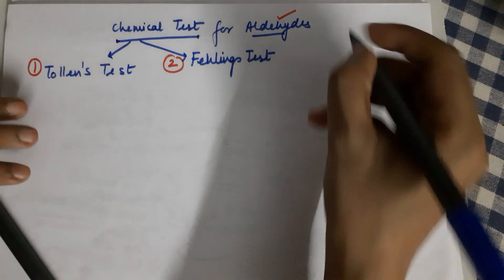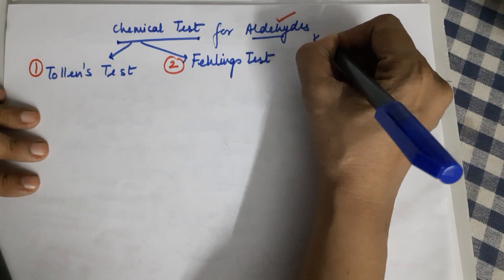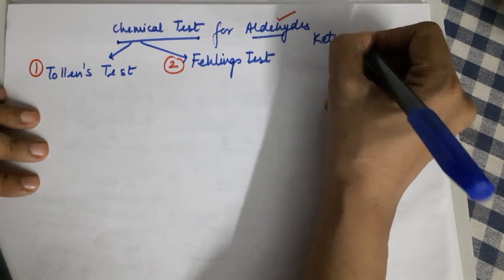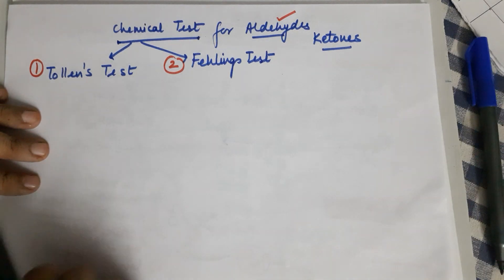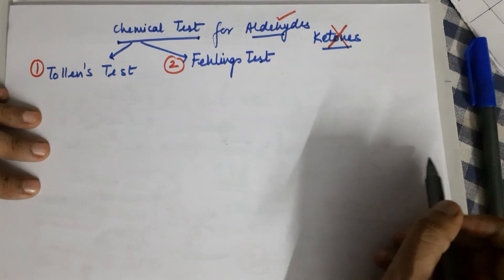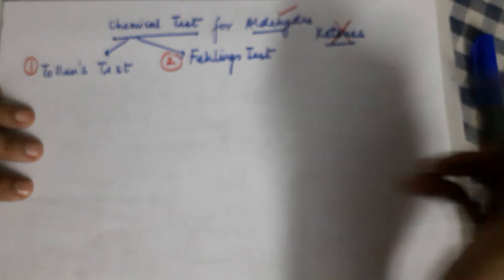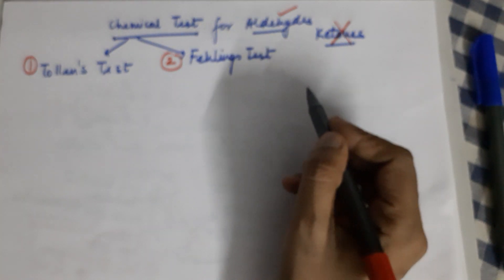This particular test is not for ketones under any circumstances, which means if you are given two compounds — an aldehyde and a ketone — you can easily distinguish between the two of them by using any one of these two reagents.